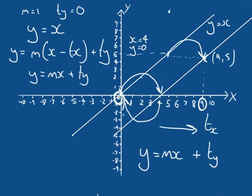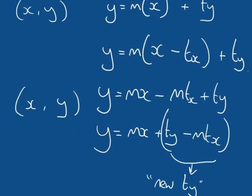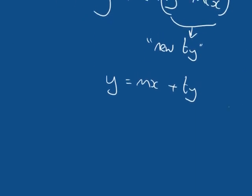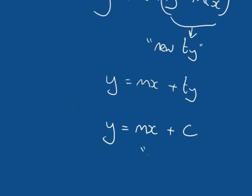We can see with our line here: we've translated in X, but we could have equally translated in Y and got the exact same line. Because of this, you don't really hear of translating separately in X and Y with a line equation. What you hear is the line equation written as Y equals MX plus C — some constant value that indicates the translation of the line. Commonly, this value C is known as the intercept.